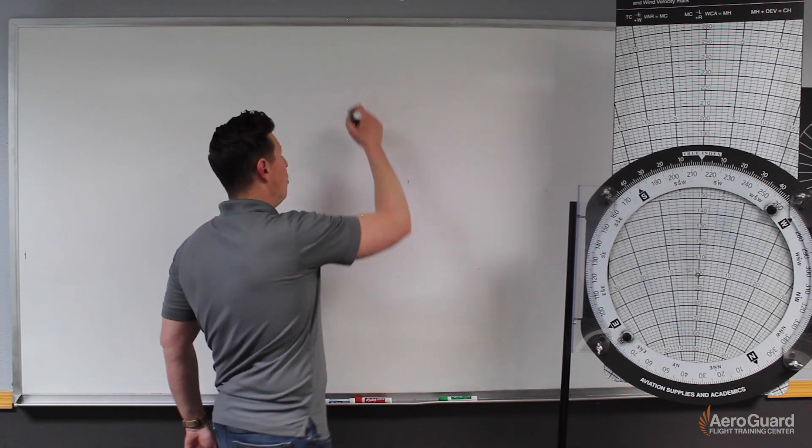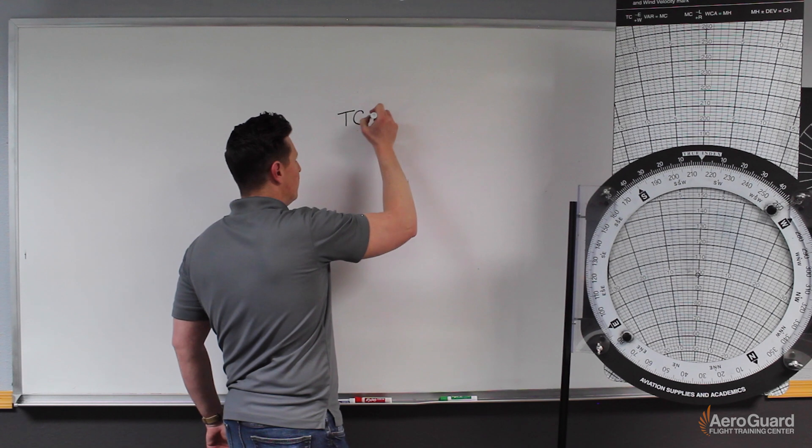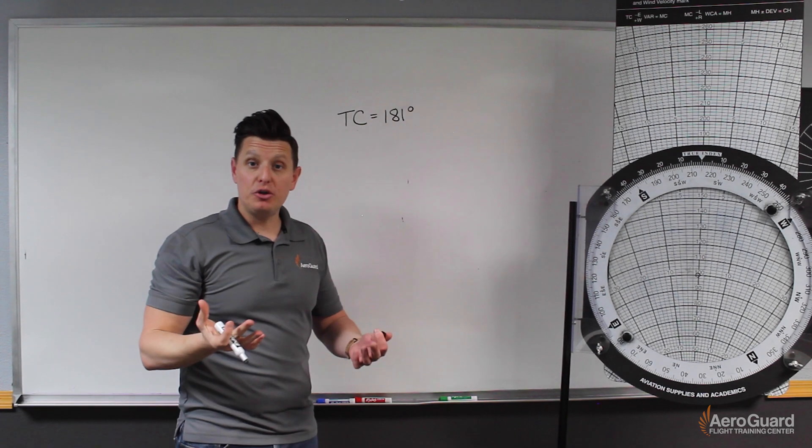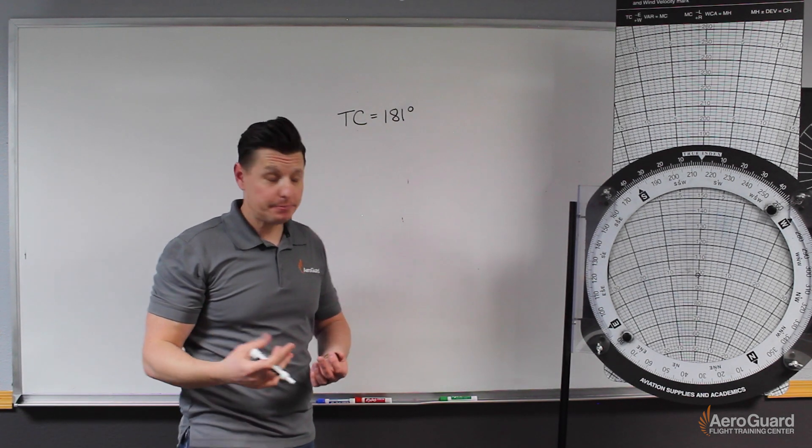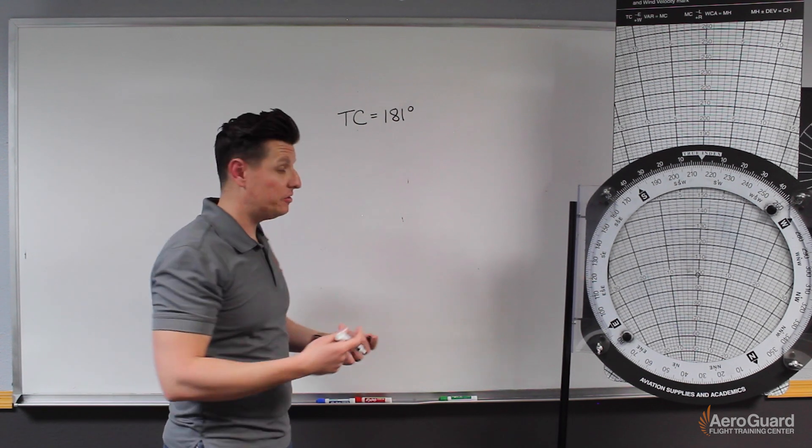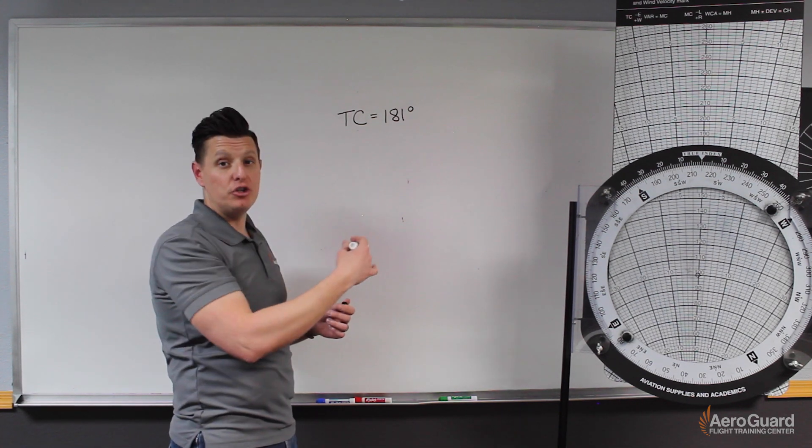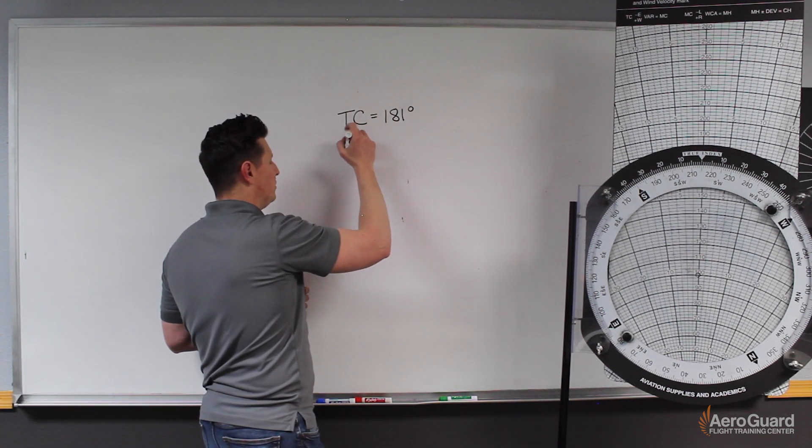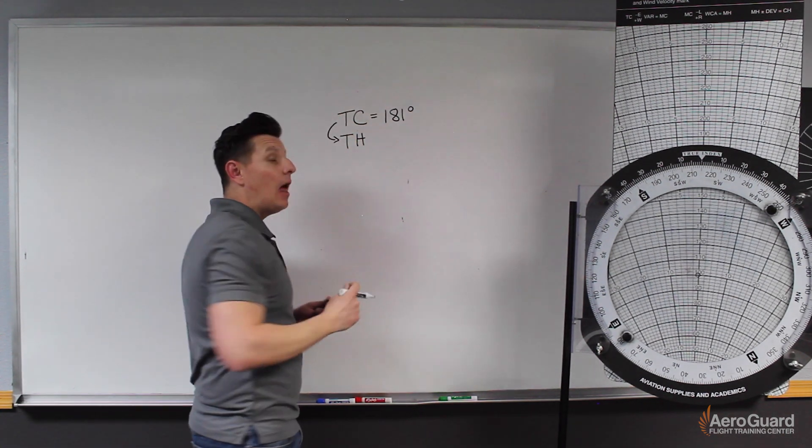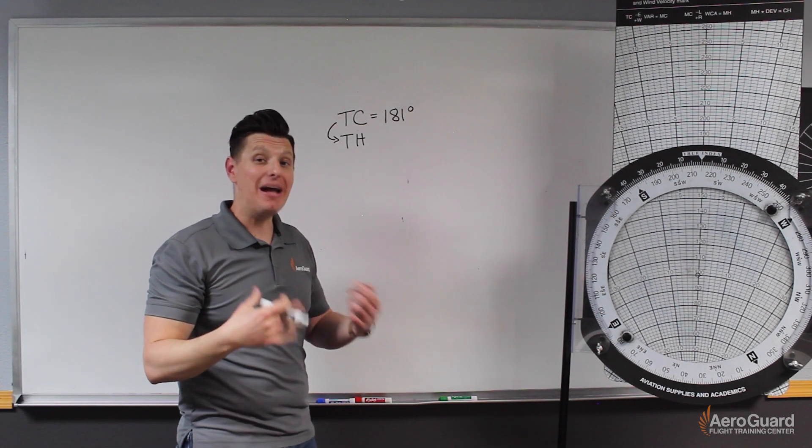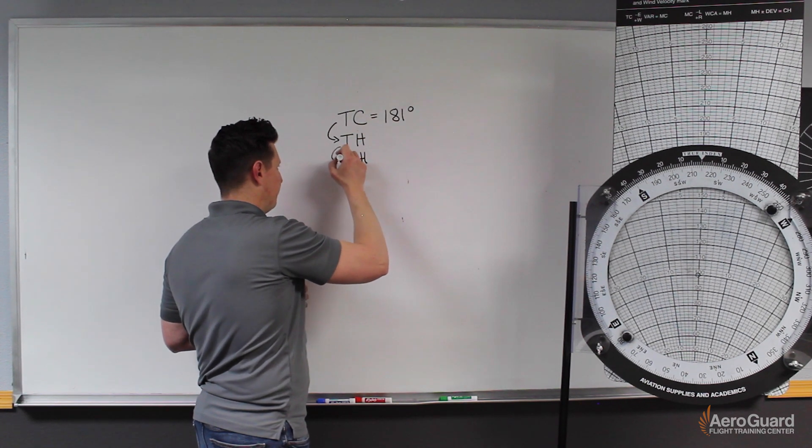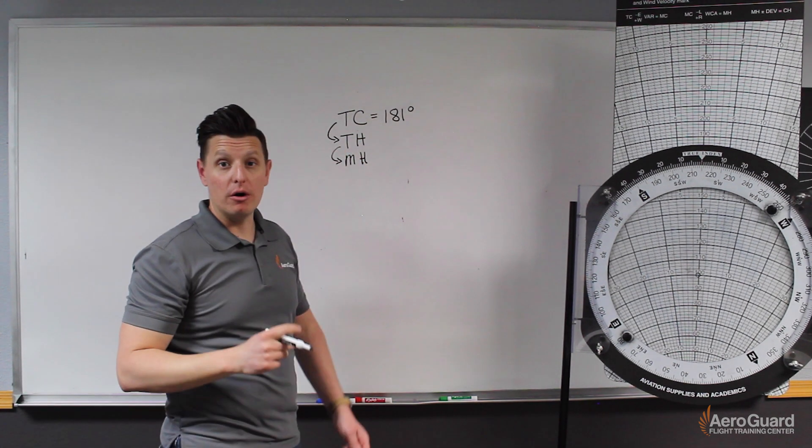So based on the chart, we know our true course is 181 degrees. But the question wants us to determine our magnetic heading. In order to do that, we're going to need to make a few adjustments to the true course. We're going to first have to make an adjustment for the wind, which means we're going to need to determine our true heading. And then we're going to need to adjust for magnetic variation, which will make us go to a magnetic heading.